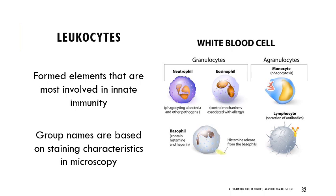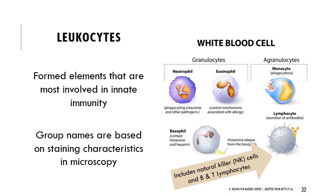Different leukocytes are important for both innate and adaptive immunity. They can be broadly divided into granulocytes and agranulocytes. Granulocyte subtypes — neutrophil, eosinophil, and basophil — are named based on their staining characteristics, though you should focus more on their function. Within lymphocytes, there are B cells, T cells, and natural killer cells; today they'll be grouped together, with individual functions covered in the next lecture.